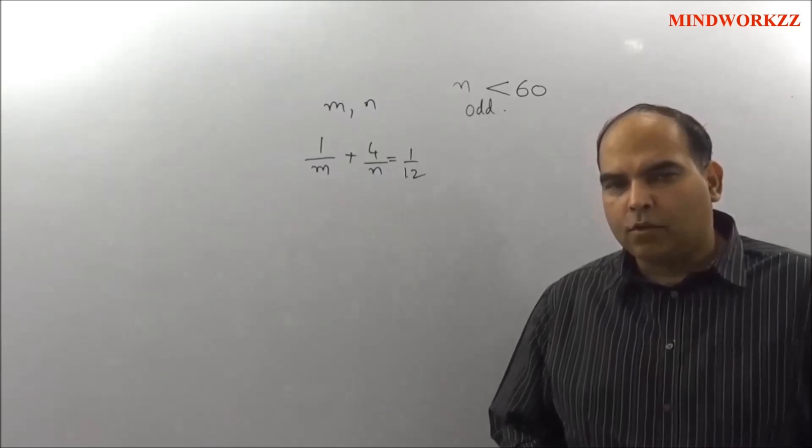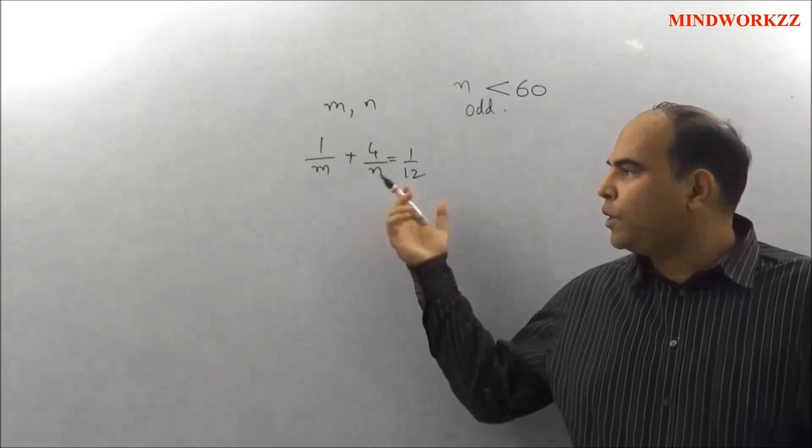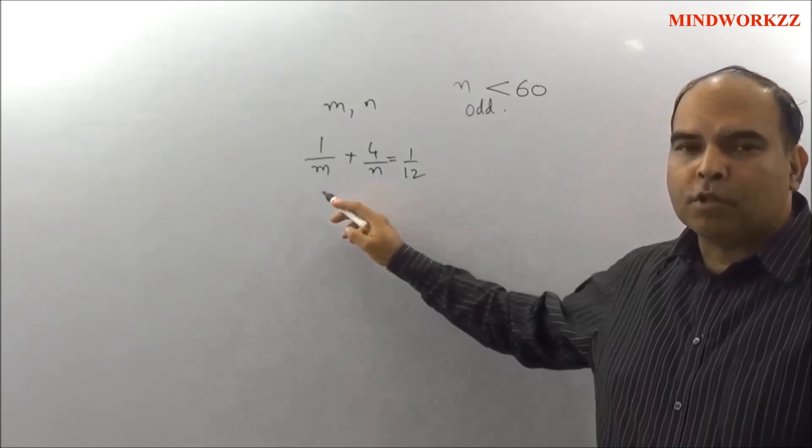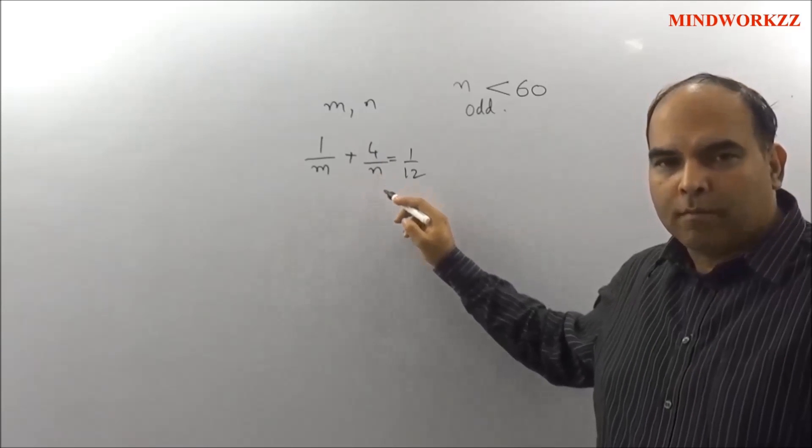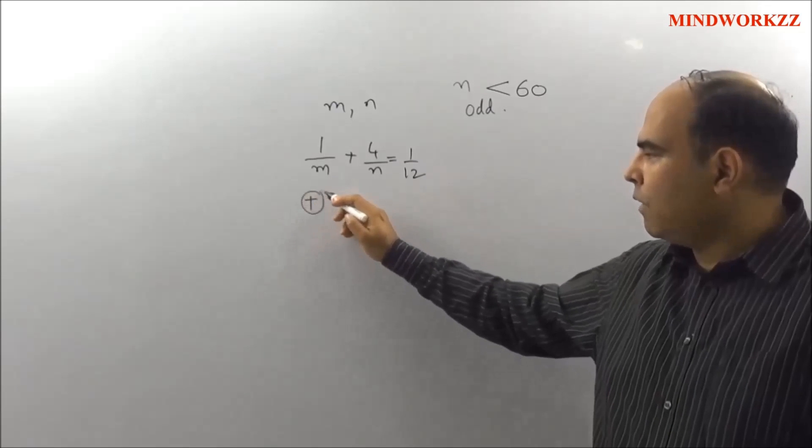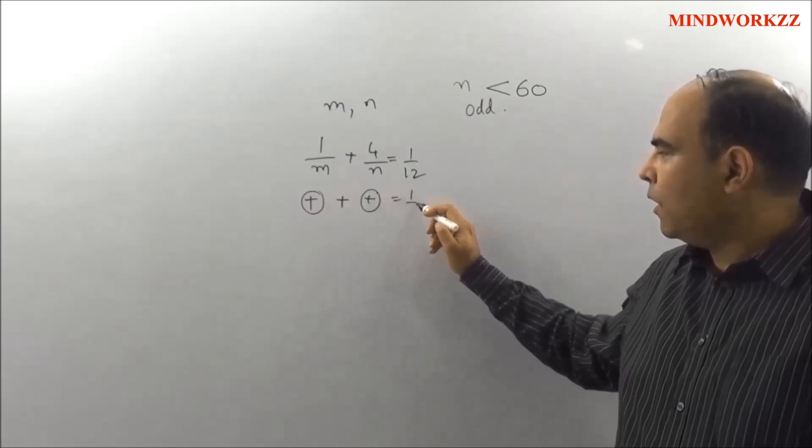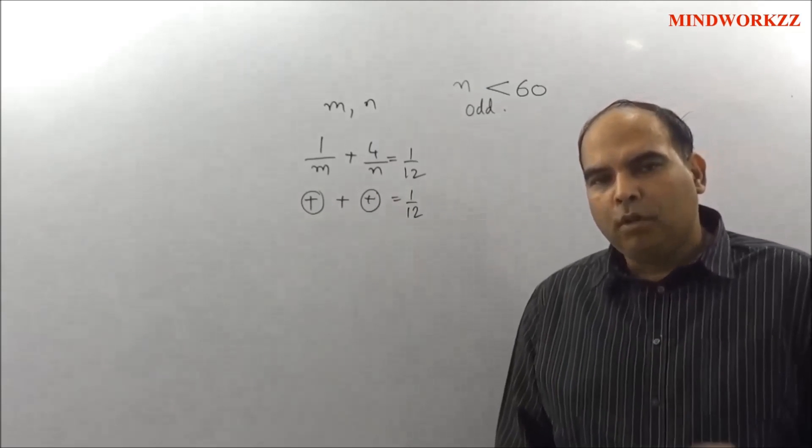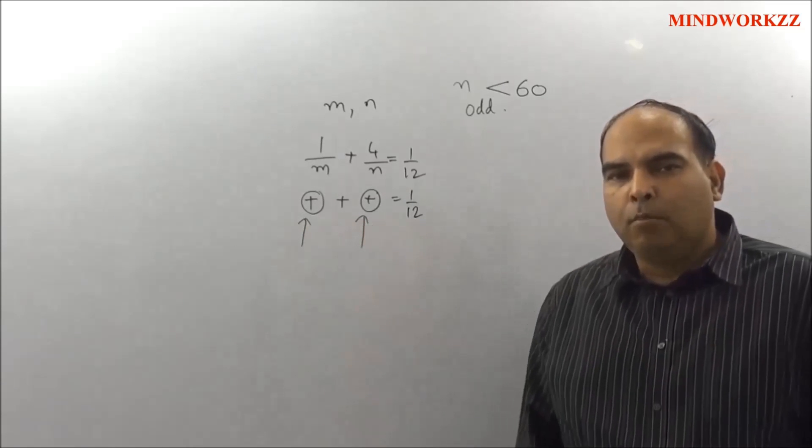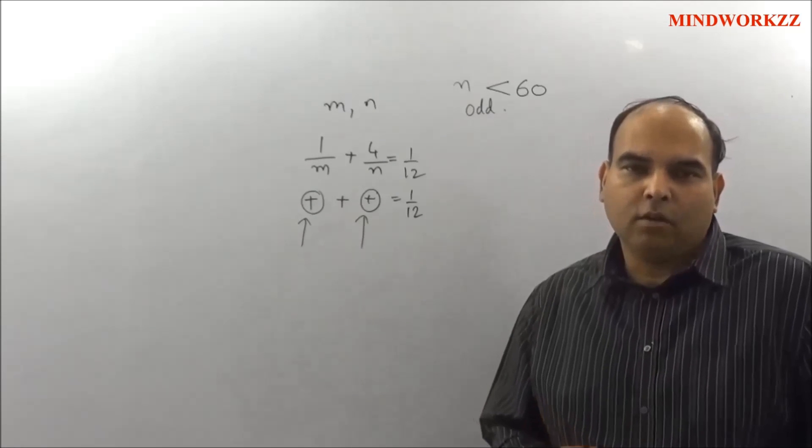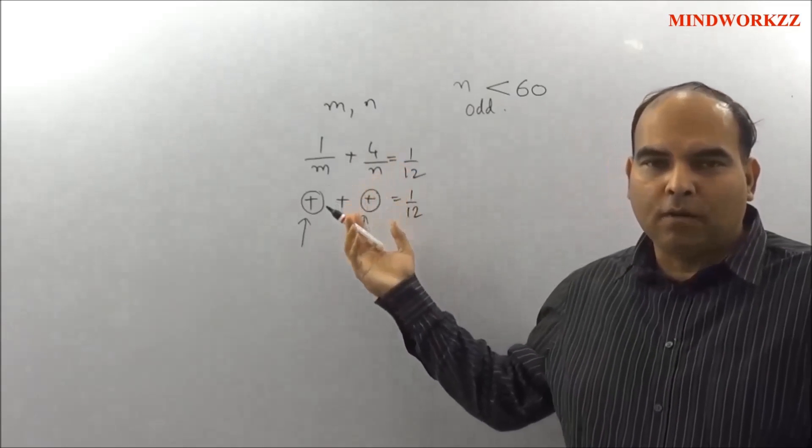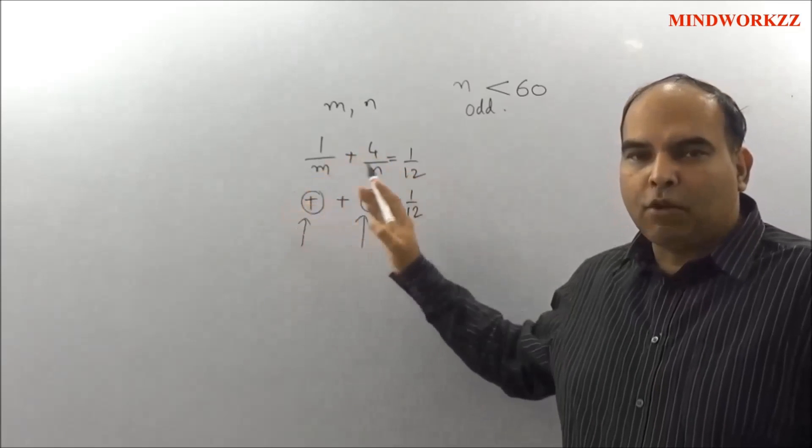When you look at these constraints, the first thing you do is read this equation sensibly. When you do that, you realize that since m and n are both positive integers, we have a situation where a positive value plus a positive value should add up to 1/12, which means both these values should be below 1/12 in terms of their individual values. Because if one of these, if let's say 4/n is more than 1/12, then adding a positive number to that may not give you 1/12.